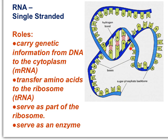Because RNA is single-stranded, it can assume many different shapes, giving it many different functions. Its roles include serving as mRNA, which carries genetic information from the nucleus to the cytoplasm; tRNA, which transfers amino acids to the ribosome; part of the ribosome itself — a large enzyme synthesizing proteins; and RNA can also itself serve as an enzyme.